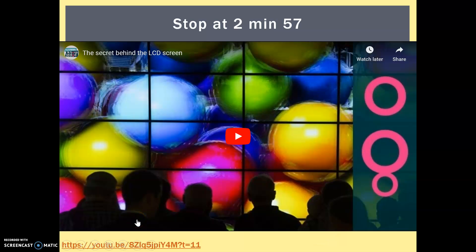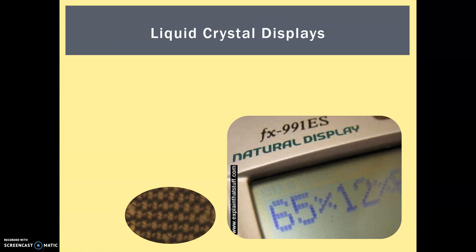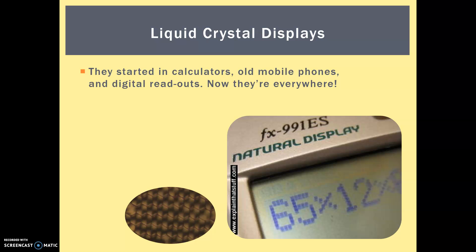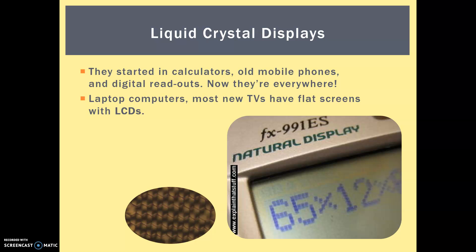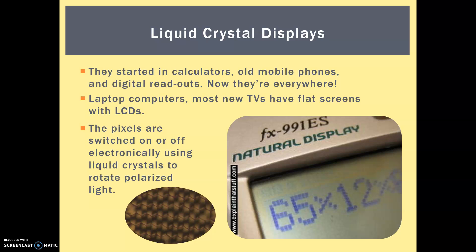I've collated a huge number of videos to help you with these. The first is about LCDs — I'd like you to watch the first three minutes and then we'll summarize it. LCDs stands for liquid crystal displays. They started in simple objects like calculators, old mobile phones, and digital readouts. Now they are everywhere and the technology is developing year on year — used in laptop computers and most new TVs. The pixels, each individual unit, are switched on or off using liquid crystals to rotate light, so it's either on, dimmed, or off entirely.